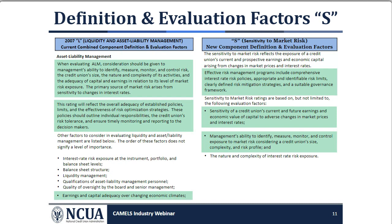The next slide provides a visual representation of how the 2007 asset liability management evaluation factors have remained relatively unchanged. The green shaded areas under the 2007 asset liability management definition represent content that is incorporated into the new S component definition. This color comparison demonstrates how content from the 2007 definition is similar to the content included in the new S definition. As you can see from the color coding, the new S component definition uses similar criteria as the old combined L definition.